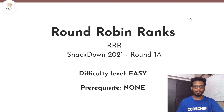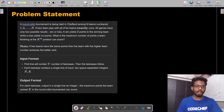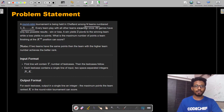Today we will be having a look at the problem Round Robin Ranks, which appeared in the Snackdown 2021 online round 1A, and the difficulty level of this problem is easy. The prerequisite to solve this is actually none. Now let's get into the problem statement. A round robin tournament is being conducted in Chefland among N teams numbered 1 through N. A round robin tournament is a format where all teams face all other teams only once, in turn — so every team plays with all other teams exactly once.